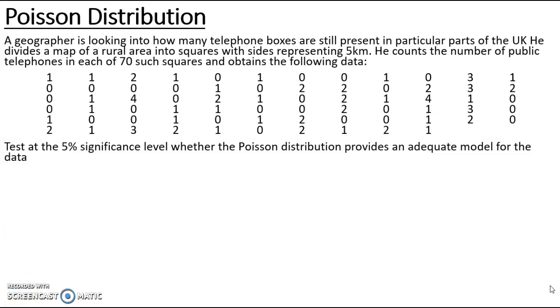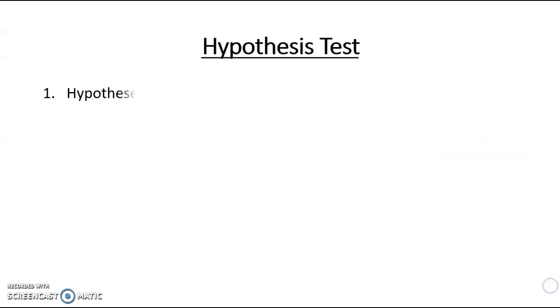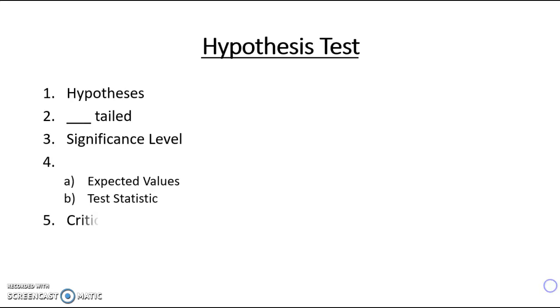The first thing we need to think about is how we compute a hypothesis test. We have seven steps that we always need to follow. We need to write our hypotheses, we need to think about if it is one or two tailed and the significance level. We need to work out a test statistic, and for chi-square goodness of fit tests we have to do the expected values first. Then we need a critical value, we compare those two, and we conclude whether we accept or reject H0.